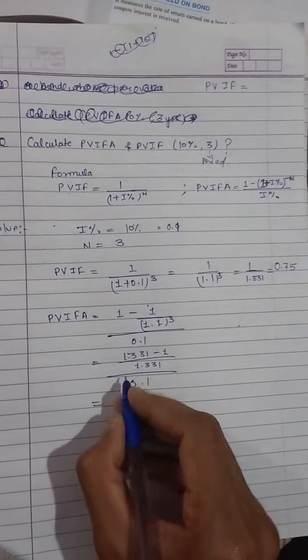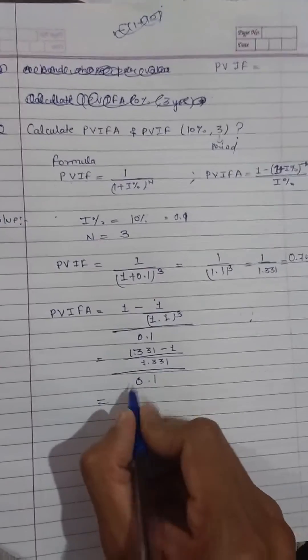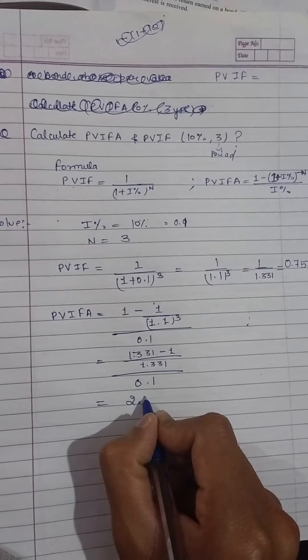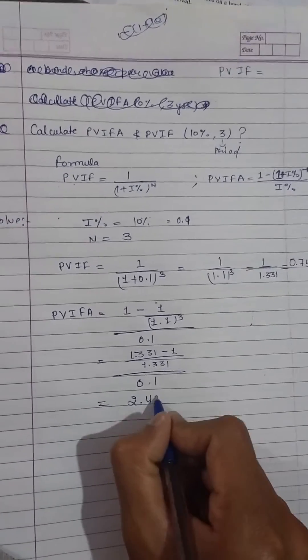So the PVIFA value comes out to be 2.487.